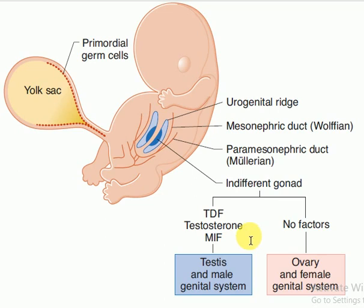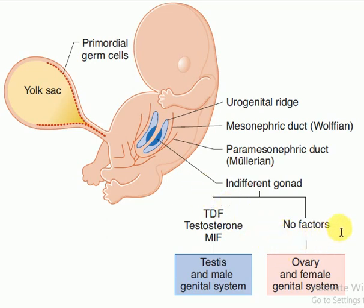And we won't have Müllerian inhibiting factor, so this pre-programmed female is going to develop into a female when there are no factors.